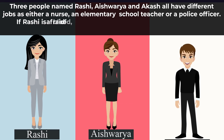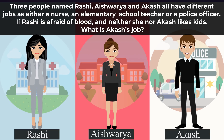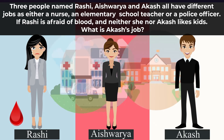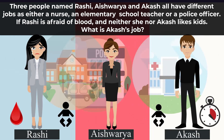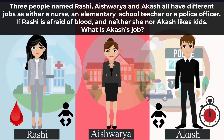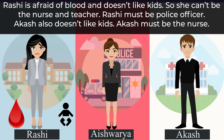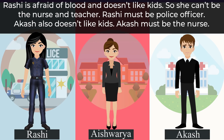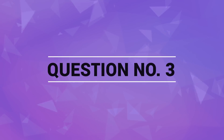Three people named Rashi, Ashwarya, and Akash all have different jobs as either a nurse, an elementary school teacher, or a police officer. If Rashi is afraid of blood and neither she nor Akash likes kids, what is Akash's job? The answer: Rashi is afraid of blood and doesn't like kids, so she can't be nurse or teacher — Rashi must be police officer. Akash also doesn't like kids, so Akash must be the nurse.